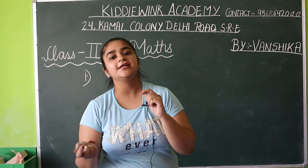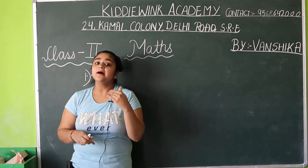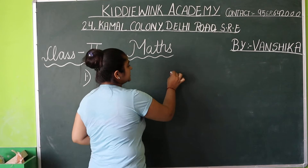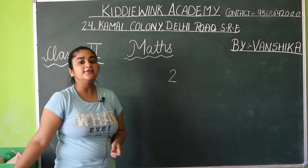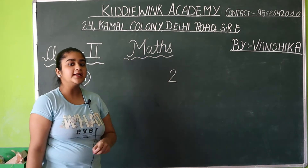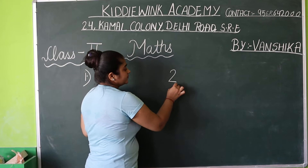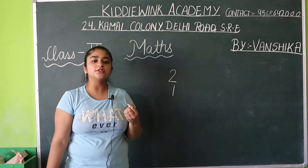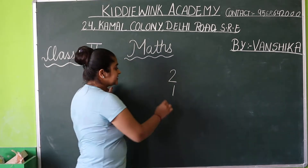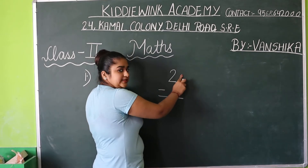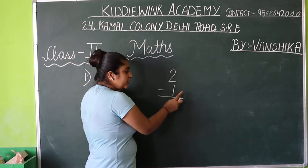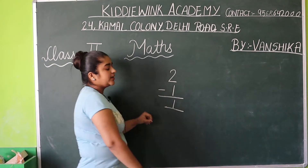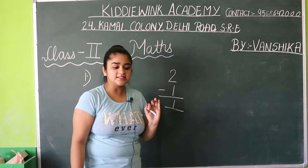Hum ne doosari li, hum ne usse use kar liya. Ab mamma ne kitni di thi pencils? Mamma ne pencil di thi two. Defect kitne mein nikla? One mein. Aapke paas kitni bachy use karne ke liye? One. Kaisi pata laga? Two mamma ne di thi, one us mein se defective nikali. Hamare paas bachy kaam karne ke liye one. Understood?